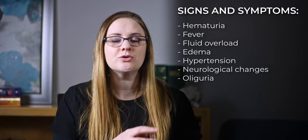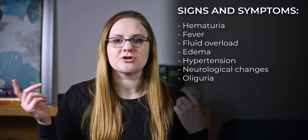Now that we know the pathophysiology of glomerulonephritis, let's talk about the signs and symptoms. During acute glomerulonephritis, those pathogen-antibody complexes are rubbing against the inside of the glomeruli, causing inflammation and damage. The major signs and symptoms you would see are: hematuria, fever, fluid overload, edema, hypertension, neurological changes, and oliguria. We're going to think critically through each one so you can actually remember them.